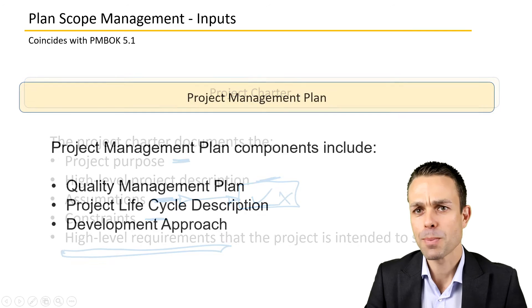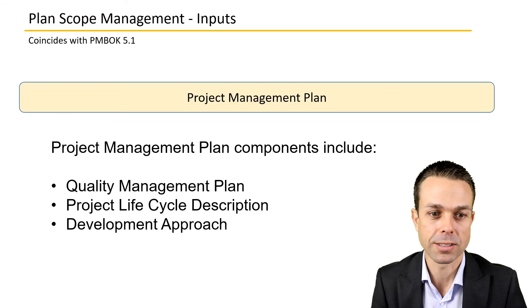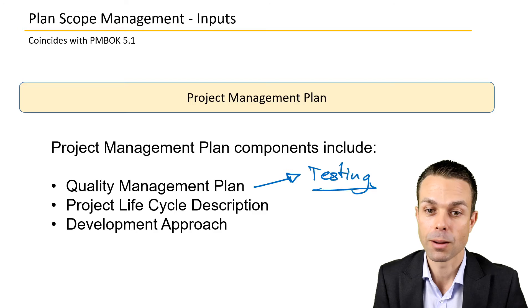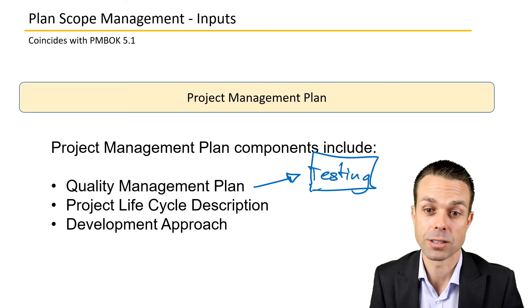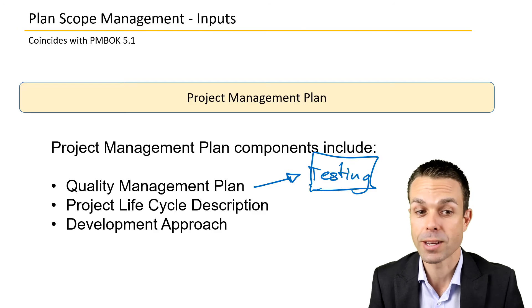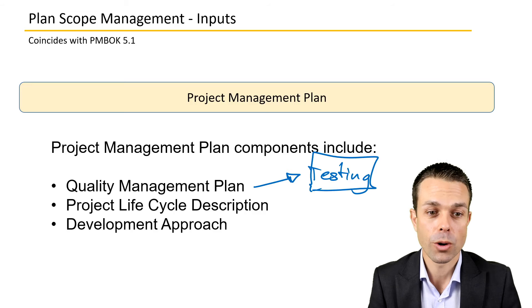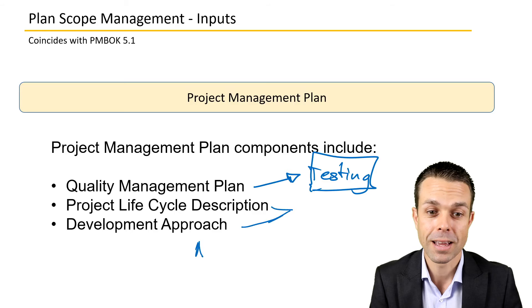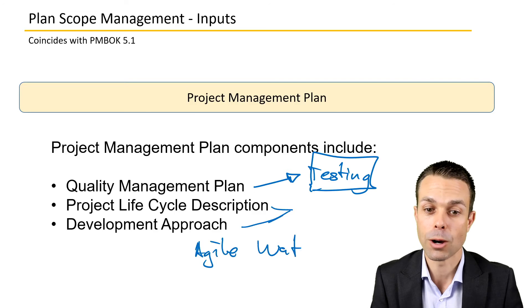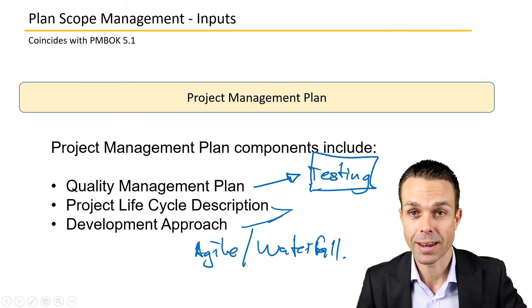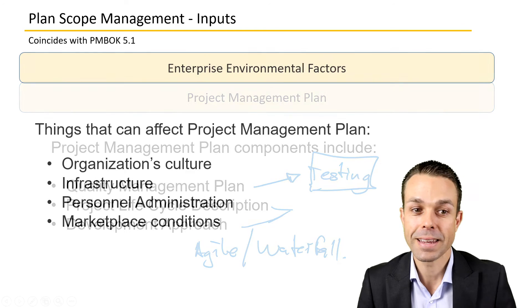We also need any constraints and high-level requirements outlined in the project charter. The project management plan itself is an input, including the quality management plan — covering how our scope testing went, whether it passed, and whether there were defects. We also need the development approach and project life cycle description: are we using agile, waterfall, or a combination? That will affect how we move forward.